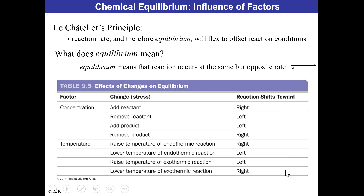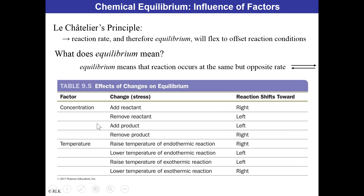If you raise the temperature of an exothermic reaction, there's already too much heat on the product side, so the reaction doesn't proceed — reactants are favored. If you lower the temperature of an exothermic reaction, it shifts right. An analogy: it's easier to kindle a fire when conditions are dry and cold — you lower the temperature of the exothermic reaction to start it. Once the fire is going, conditions favor keeping it going.